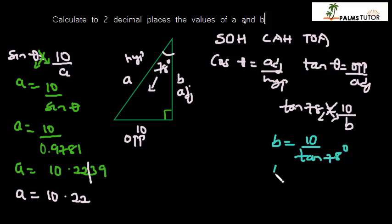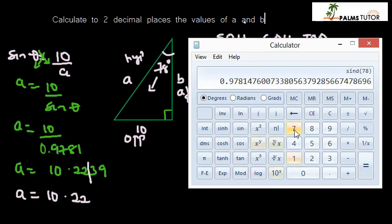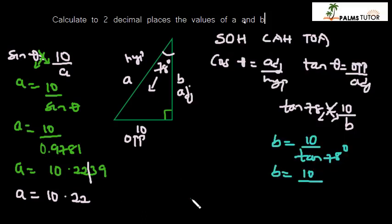Let's see what tan 78 is. Tan 78 is 4.7046 to four decimal places. So b will be equal to 10 divided by 4.7046, which is 2.1256.